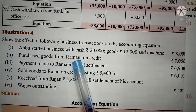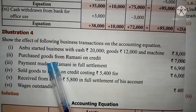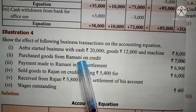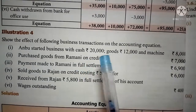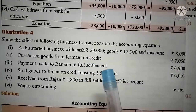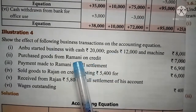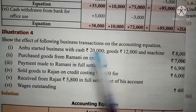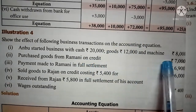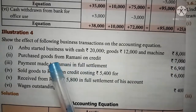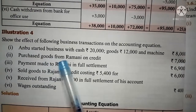Next, goods are purchased from Ramani on credit. Since we are purchasing goods on credit, a creditor will arise. On the right side (liability side), you should prepare a creditor column — no need to write the name, just write 'creditor.' The amount in the creditor column will be 7,000. In the stock column, since we are purchasing goods, stock will increase, so add 7,000 to stock.